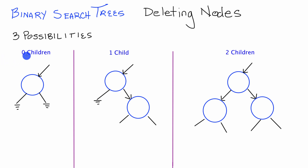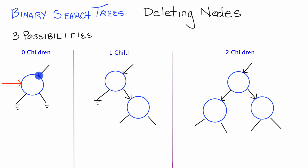Let's start with the first case where the node that we want to delete has no children. I've drawn this red pointer here — you can think of this as the deletion pointer. It's pointing to the node that we want to delete, and every node in the tree is always going to have some pointer pointing to it, whether it's a pointer from a parent node or the root pointer.